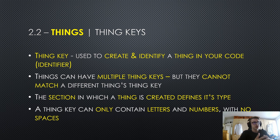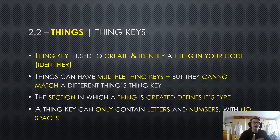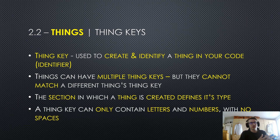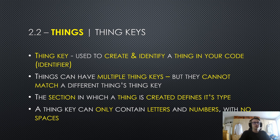Basically, this means that you cannot have two buildings or two upgrades that have the same thing key, because then when you refer to them the engine gets confused as to which one it should pick. So each thing should have unique thing keys. The section in which a thing is created defines its type. For example, if you create a thing in the building section you created a building; if you create a thing in the resources section you created a resource, and same thing with upgrades, shinies, items, etc. A thing key can only contain letters and numbers with no spaces.